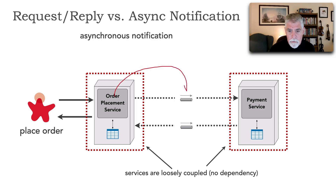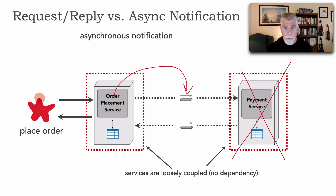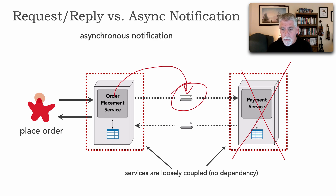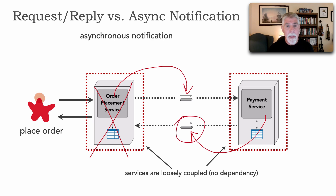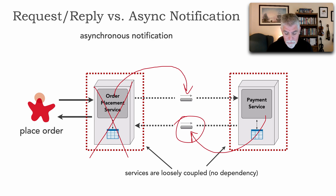I am sending a message fire-and-forget to a queue. So if the payment service happens to be down, the payment will be applied at some point because the message is on the queue — I am really decoupled from that payment service. Once payment service becomes available, it sends the message back. And the nice thing is I don't have to be available either, because that payment information is persisted in the queue waiting for me to come back up. There's no real dependency other than the contract between these two services.